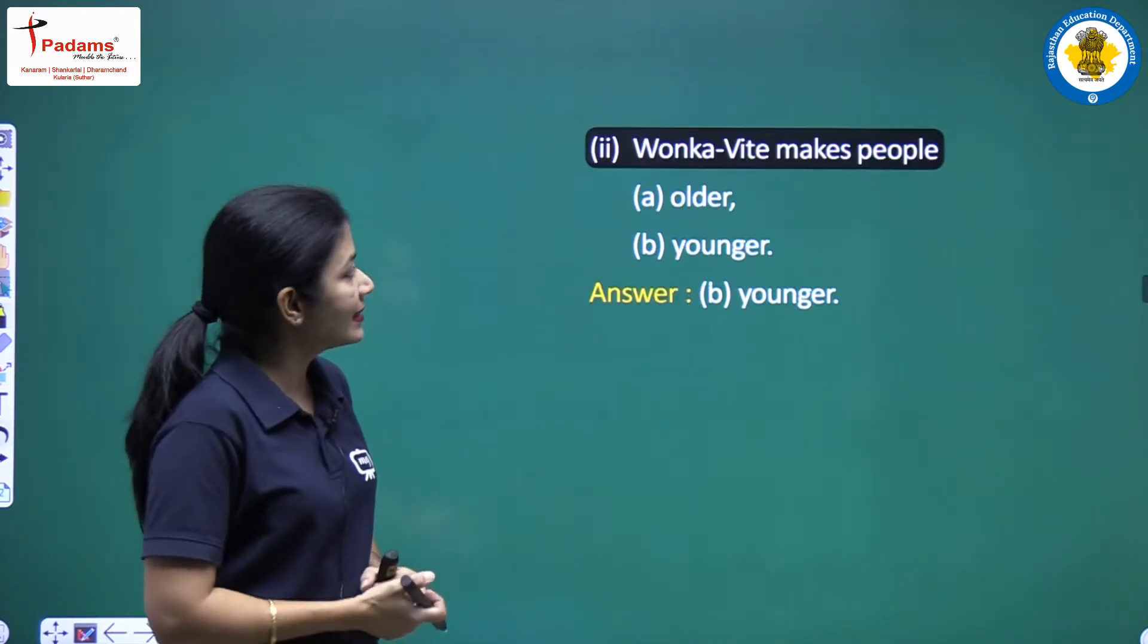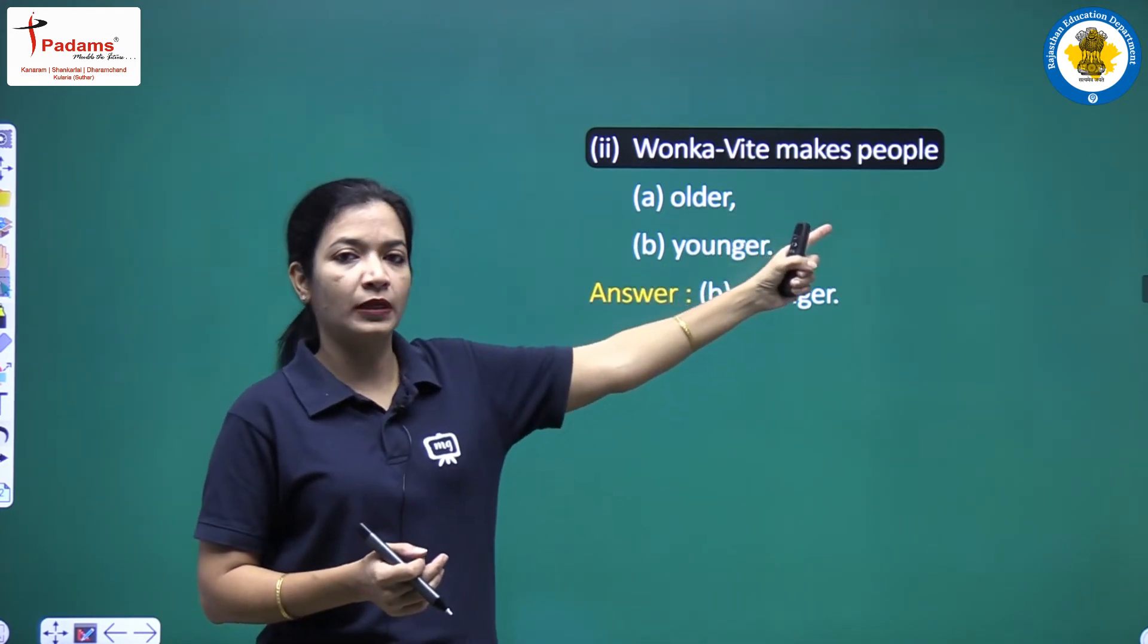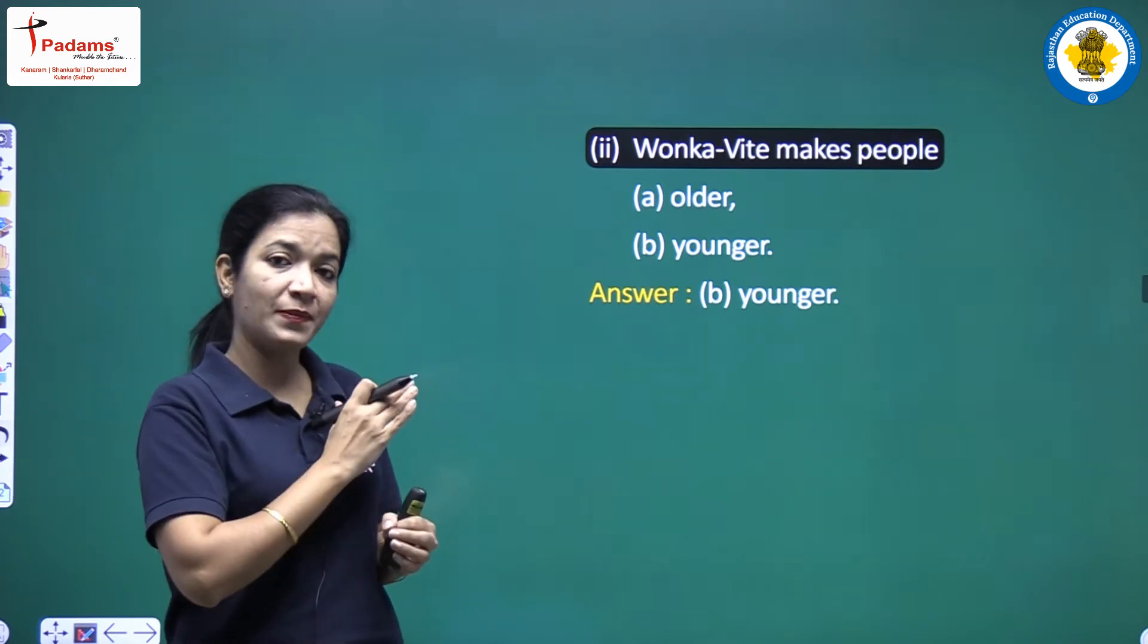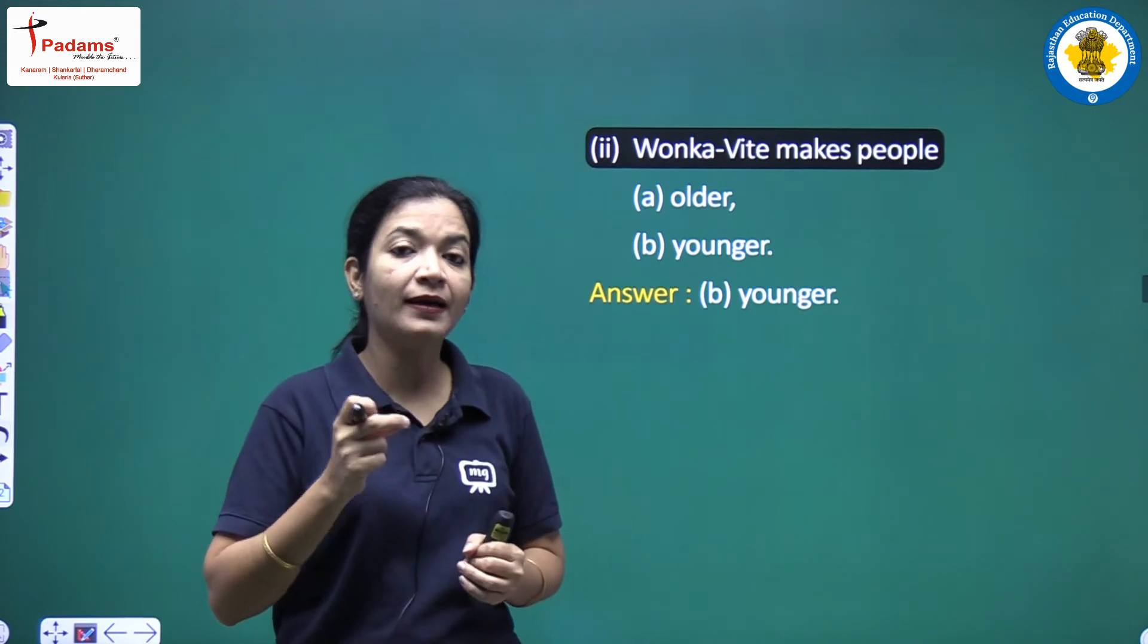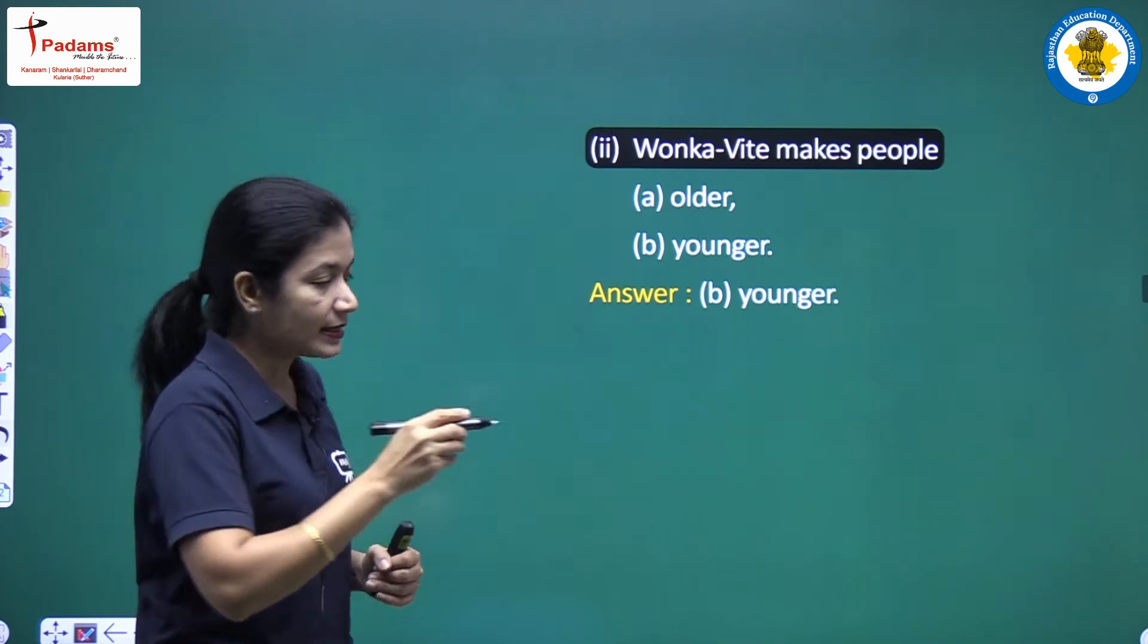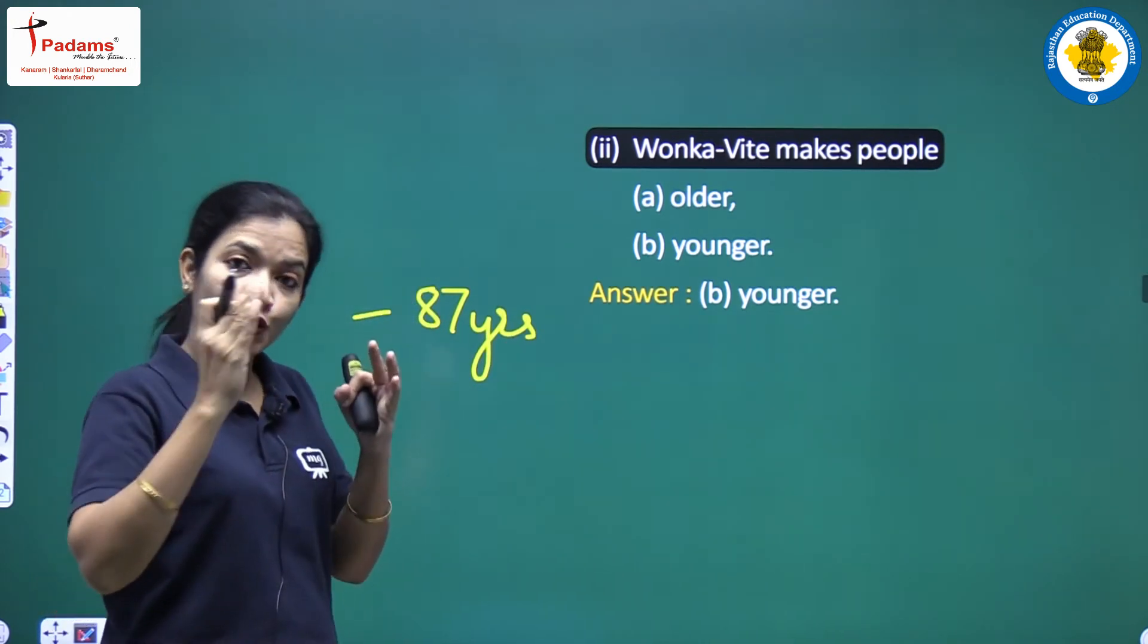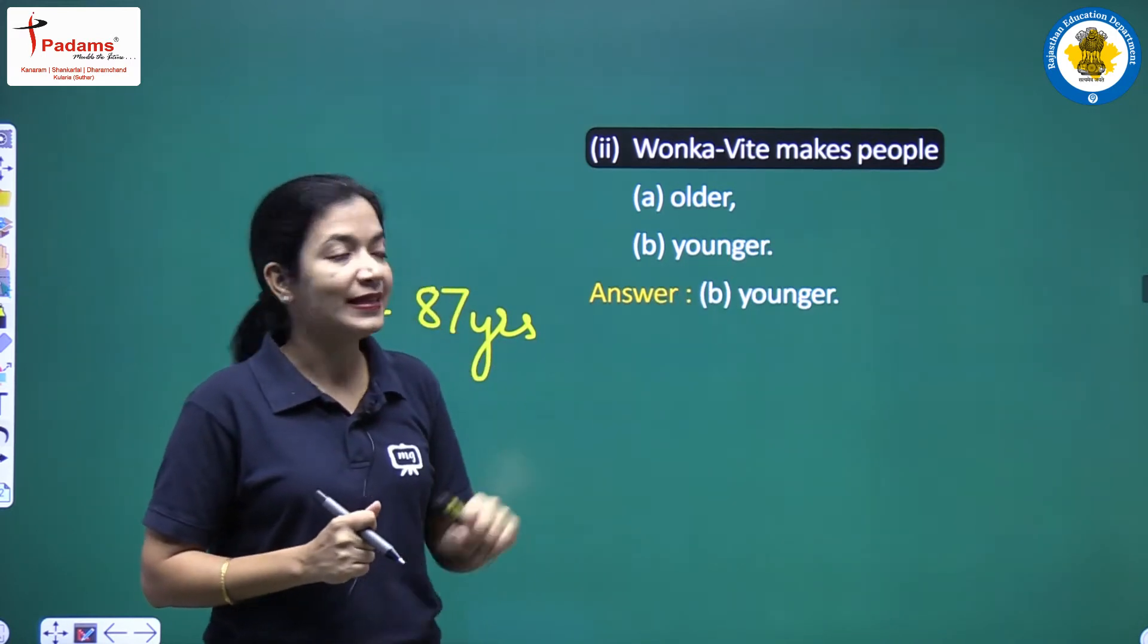Let's see the second one. Wonka White makes people - I told you, Vita-Wonk is what he's going to make, but what does he already have? Wonka White, which makes age smaller, even minus 87. Does Wonka White make people older or younger?